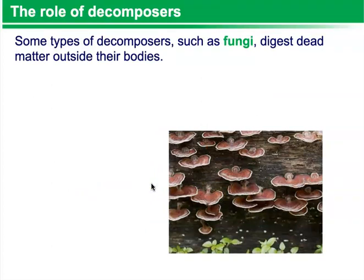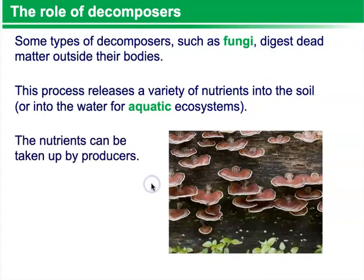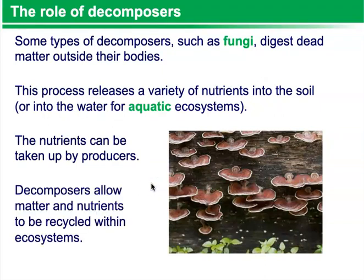The role of decomposers. Some types of decomposers, such as fungi, digest dead matter outside their bodies. This process releases a variety of nutrients into the soil, or into the water for aquatic ecosystems. The nutrients can then be taken up by producers. Decomposers allow matter and nutrients to be recycled within an ecosystem — this is extremely important, as nutrients can then be resupplied to producers as they go through photosynthesis and make glucose.